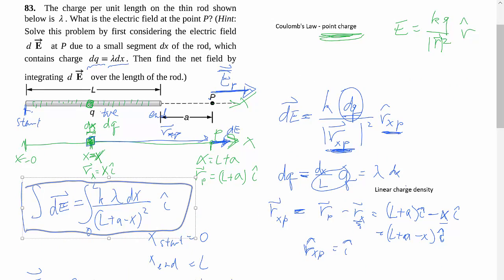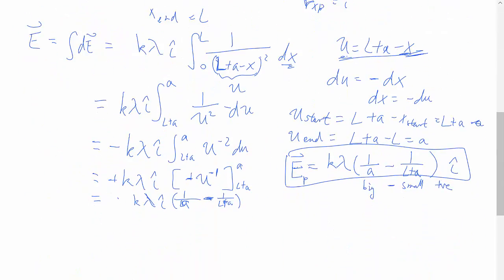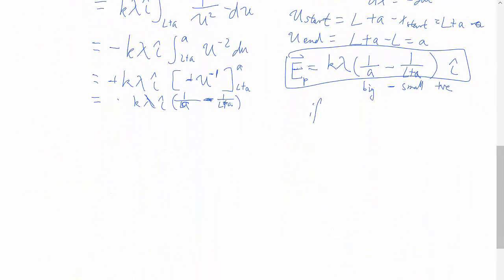And then also, if q was somehow negative, what would happen is, if q is negative, then lambda is going to be negative, and then E_P is going to be in the negative i direction. So I guess this can be the unit vector. And so everything makes sense. If we keep track of the unit vector properly, then the direction will be tracked for us directly.